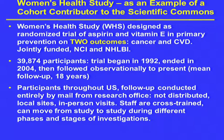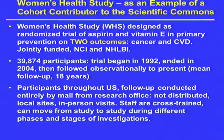The Women's Health Study was designed as a randomized trial of aspirin and vitamin E in the primary prevention of two outcomes — not just cancer, but cancer and cardiovascular disease. It was jointly funded by the NCI and the NHLBI. We have about 40,000 participants. It began in 1992. The trial ended in 2004, and we then followed them observationally to the present, giving us a mean follow-up of 18 years. The participants are throughout the United States, and follow-up is conducted entirely by mail from our research office — no distributed local sites, no in-person visits.